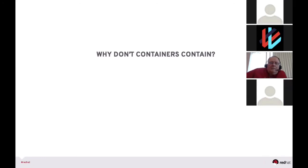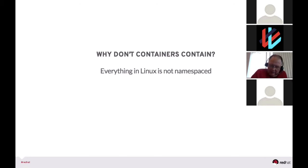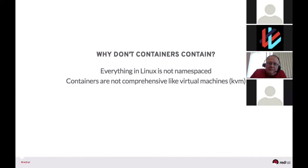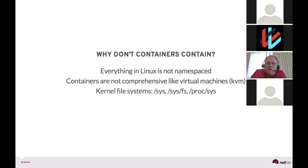Why don't containers contain? There's a whole bunch of Linux that is not namespaced, so there's not good enough isolation in other parts of the system — mostly things that admin tools need to do. Containers are not comprehensive like KVM virtualization. If we namespaced everything, we'd basically be building KVM — in which case you might as well just use KVM, which brings its own host kernel instead of sharing it. Things that aren't namespaced include kernel file systems. Since those aren't namespaced, we really want to prevent processes from writing to kernel file systems.